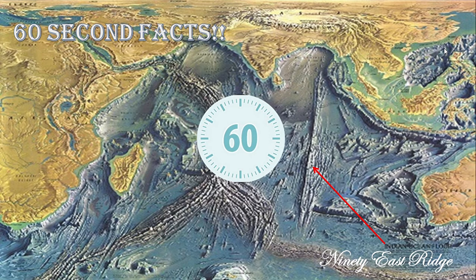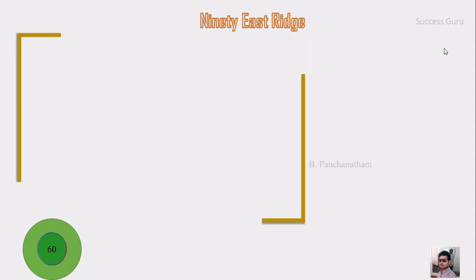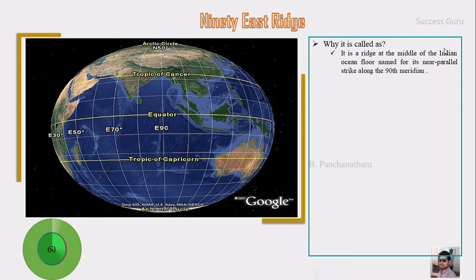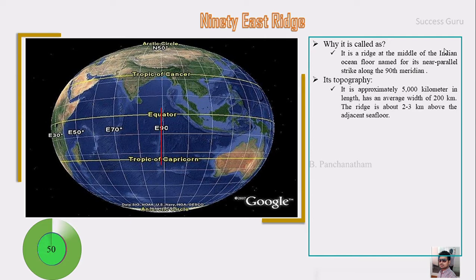Welcome to my channel Success Guru. I'm Panchanatham, and the topic is the 90 East Ridge. It is a ridge in the middle of the oceanic floor, named for its near-parallel alignment along the 90th meridian. It is approximately 5,000 kilometers long with an average width of 200 kilometers.